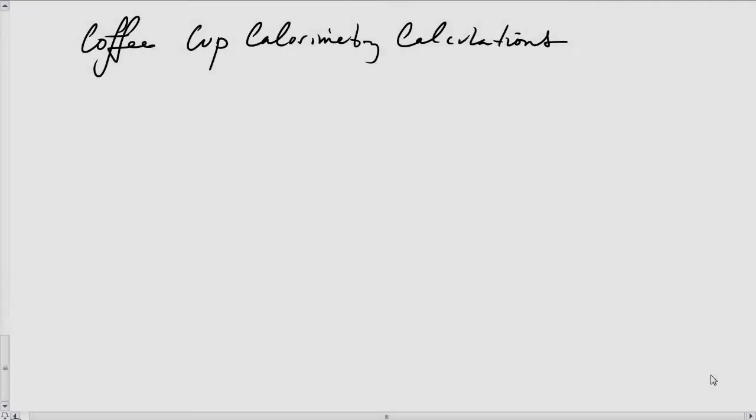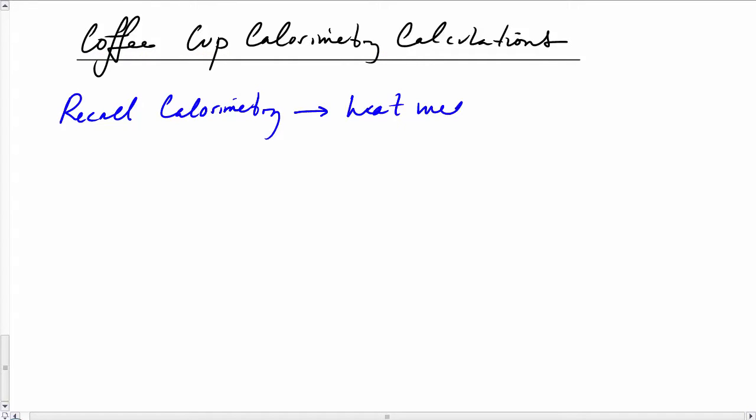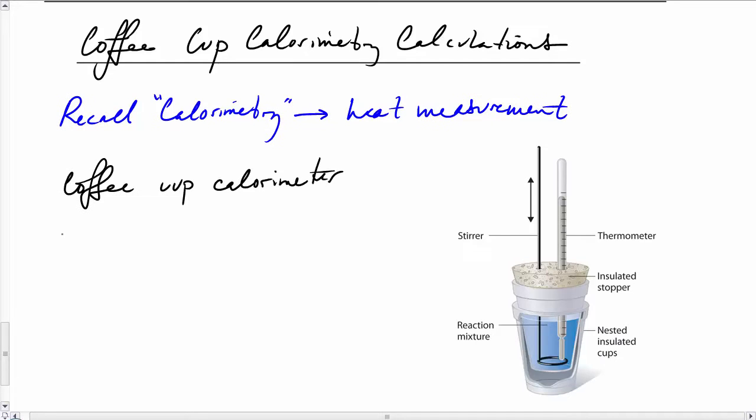Here we have today's lesson on coffee cup calorimetry calculations. Recall that calorimetry is heat measurement. In a coffee cup calorimeter, just like the one you see here, we have our reaction: hydrochloric acid and sodium hydroxide gives water and sodium chloride. We're trying to find the enthalpy change for this reaction.